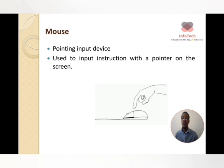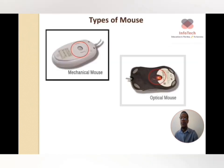The mouse is used to input instructions with a pointer on the screen, which you would call your cursor. On a mouse you have the left click, the right click, and the scroll wheel in the middle. There are two types of mouse: the mechanical mouse and the optical mouse.